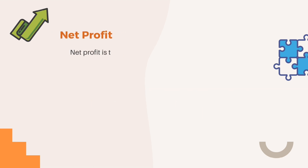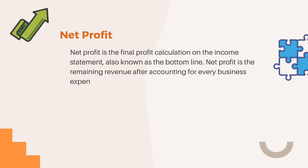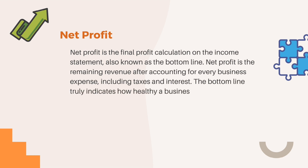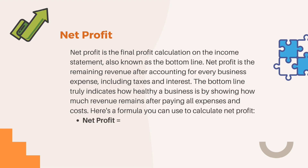Net profit is the final profit calculation of the income statement, also known as the bottom line. Net profit is the remaining revenue after accounting for every business expense, including taxes and interest. The bottom line truly indicates how healthy a business is by showing how much revenue remains after paying all expenses and costs. The formula to calculate net profit is: Net Profit = Operating Profit − Tax and Interest Costs.